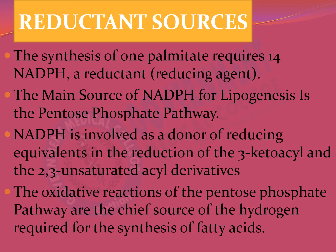NADPH plays a completely different role from NAD. For the production of one molecule of palmitate, the body must supply 14 NADPH molecules, which act as a reductant — that is, a reducing agent. The main source of this NADPH used in lipogenesis is the pentose phosphate pathway, also known as the HMP shunt.